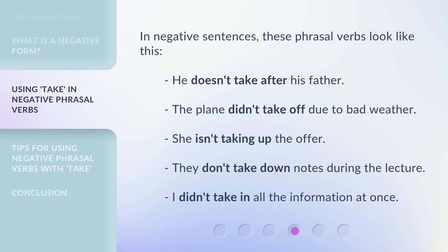In negative sentences, these phrasal verbs look like this: He doesn't take after his father. The plane didn't take off due to bad weather. She isn't taking up the offer. They don't take down notes during the lecture. I didn't take in all the information at once.